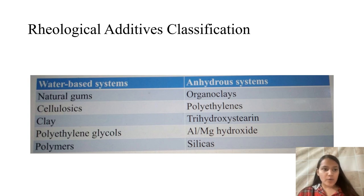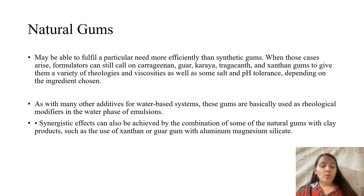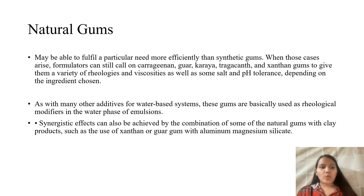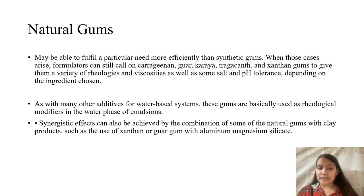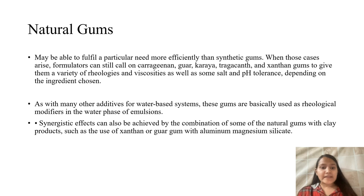From the water-based systems, we first look at natural gums. Natural gums may fulfill particular needs more efficiently than synthetic alternatives. Formulators can use carrageenan, guar, karaya, tragacanth and xanthan gums to achieve a variety of rheologies and viscosities, as well as salt and pH tolerance. Natural gums can also be combined with other modifiers, for example combining xanthan or guar gum with aluminium or magnesium silicate clay products.